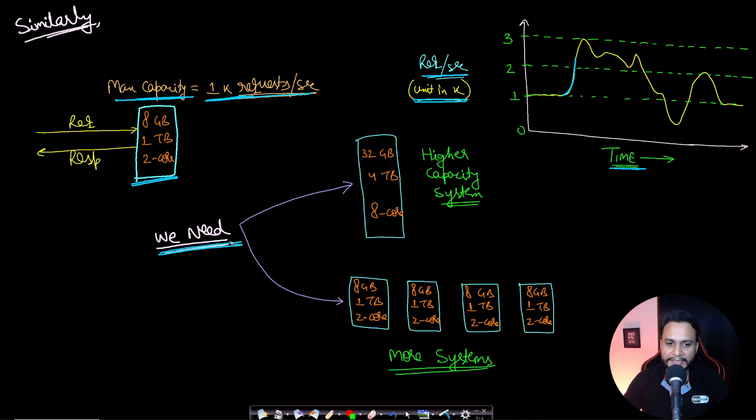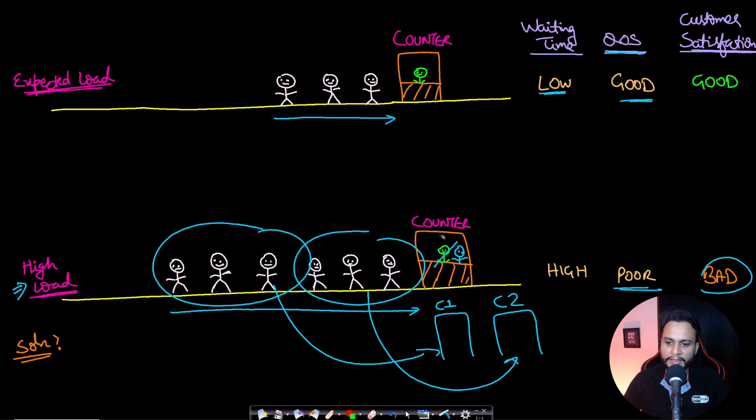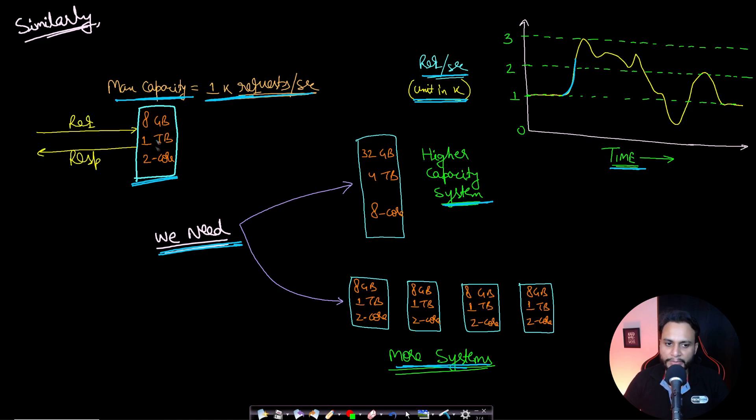In this kind of situation we need to either increase the capacity of the system, that is the first thing to do, or we can increase the number of systems like in our ticket counter example. If we would replace an inefficient person with a more efficient person, then actually it is as good as saying that we are increasing the capacity of this system. So from 8 GB RAM we can make it 4x to 32 GB RAM, from 1 TB hard disk to 4 TB, and from 2 core processor to 8 core processor system.